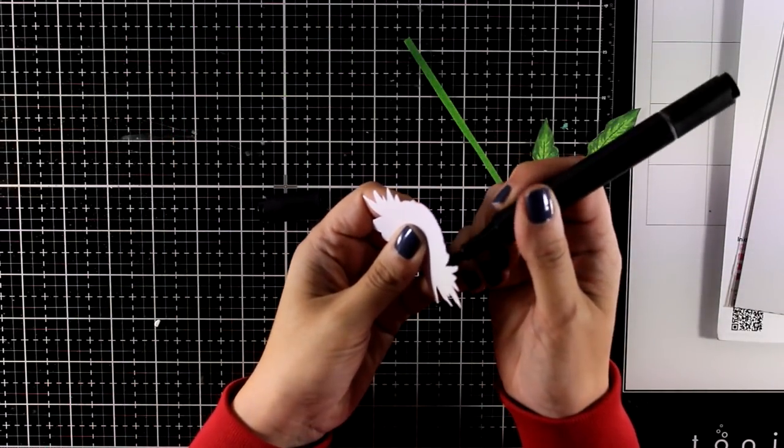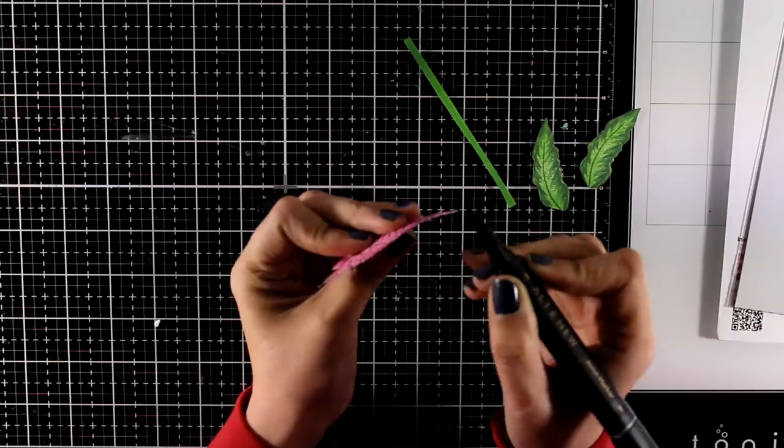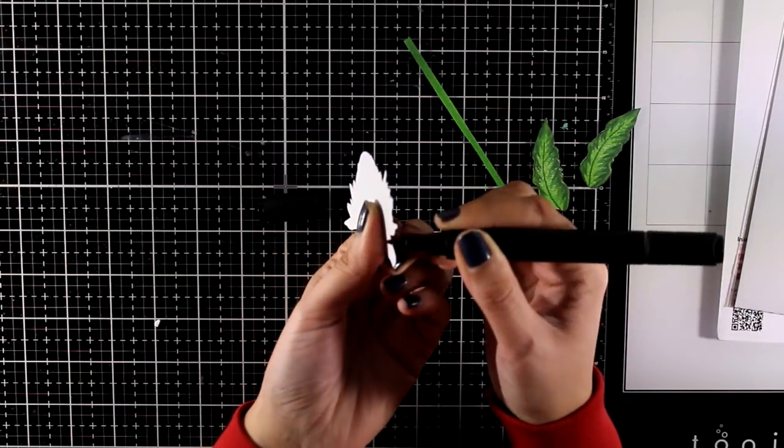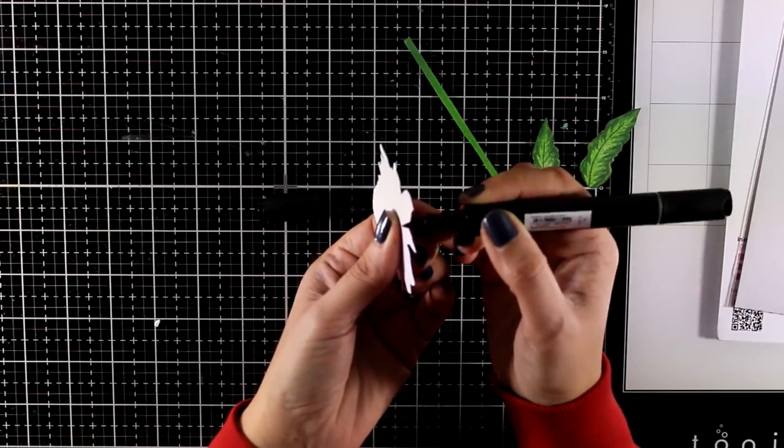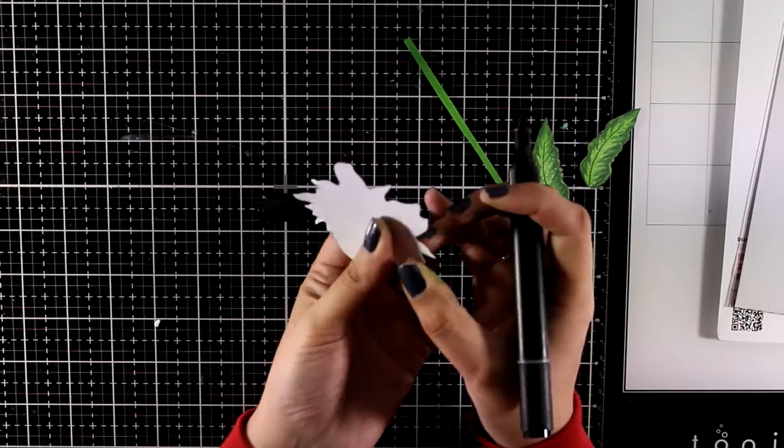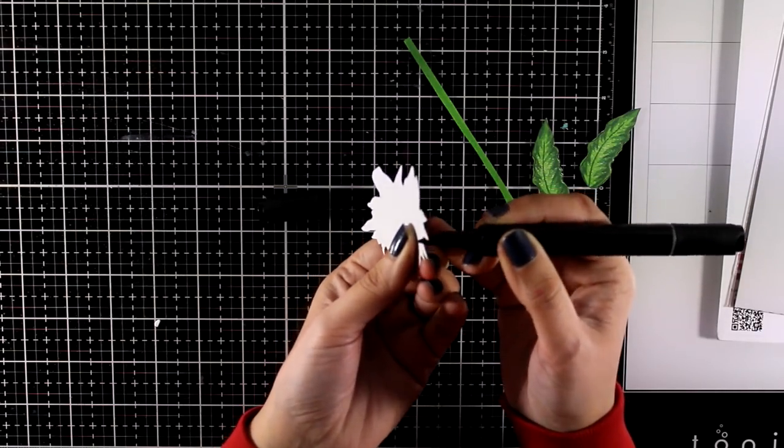I'm using a black marker and will go all around the edges. This is going to get rid of that white edge and cover up any mistakes I made while cutting out the leaves and petals. It'll look as if I did the perfect job.